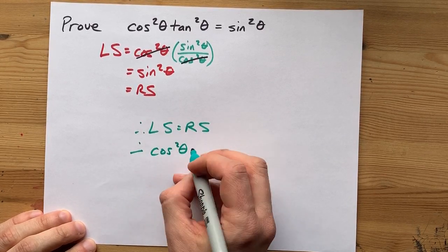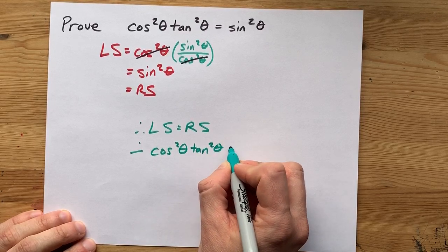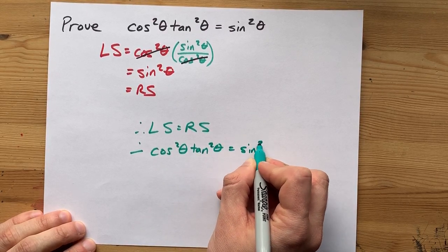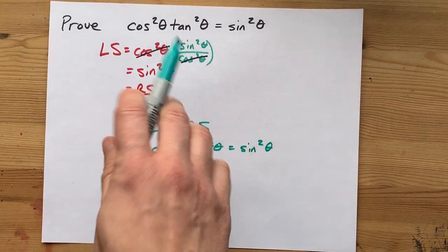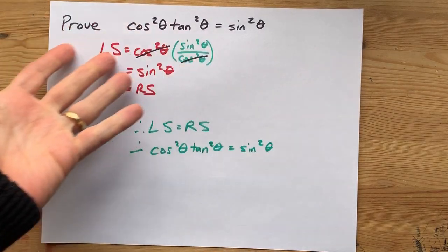For every angle you can think of, cos squared of that angle times tan squared of that angle equals the sine squared of that angle. Nice. Good luck to you with whatever identity you're trying to prove.